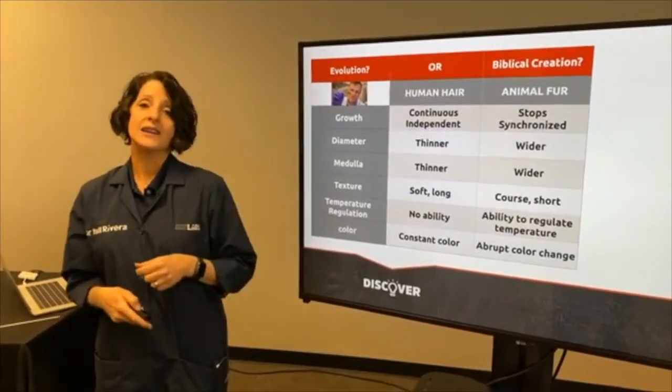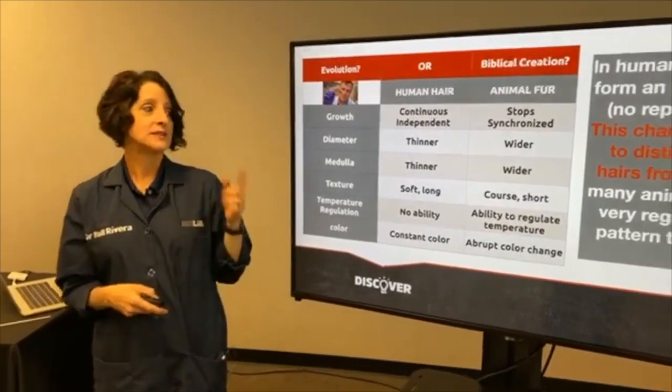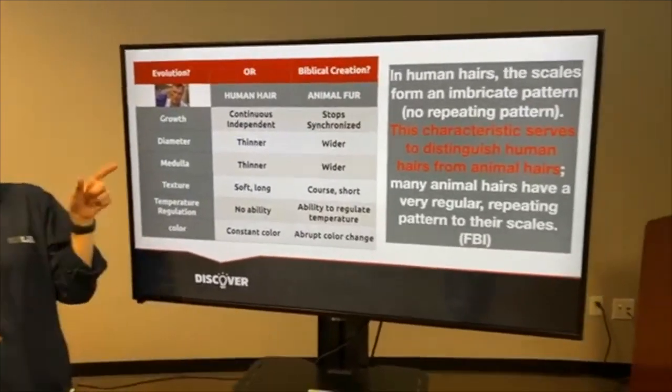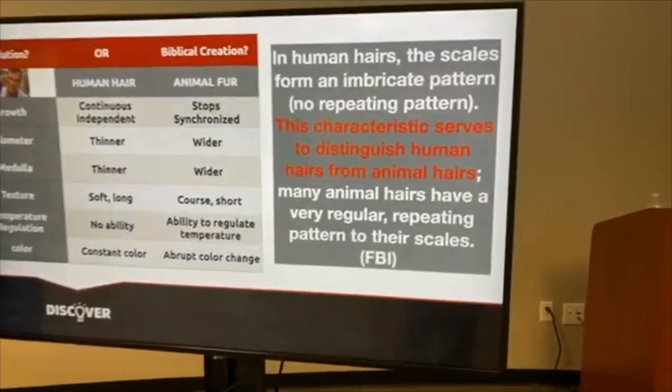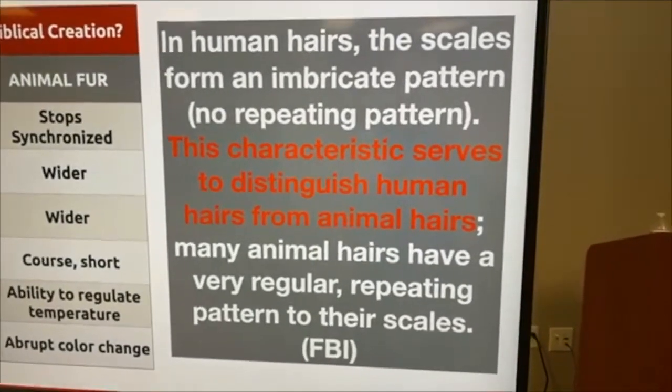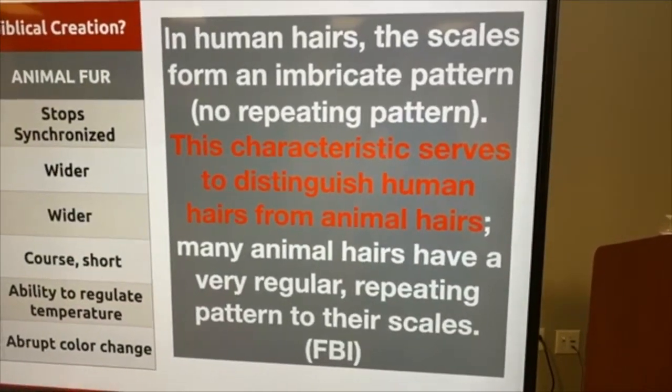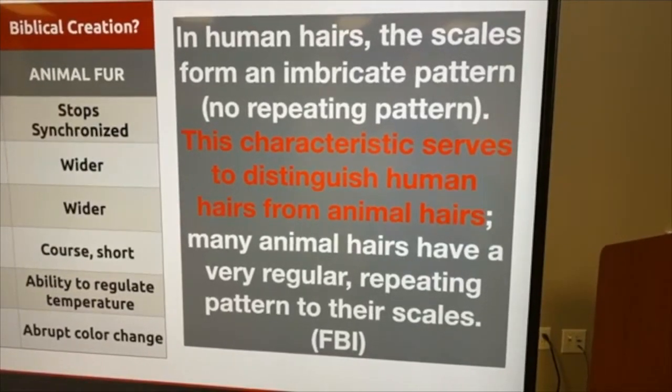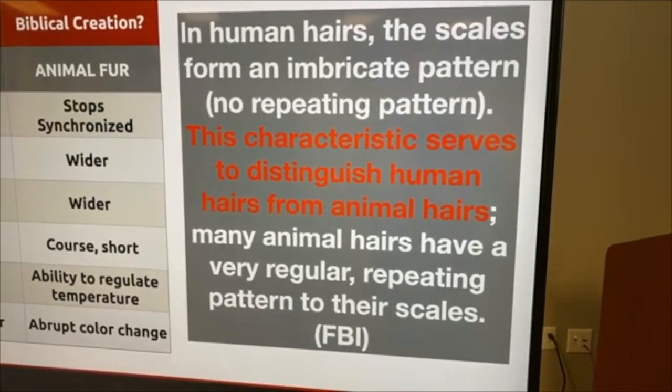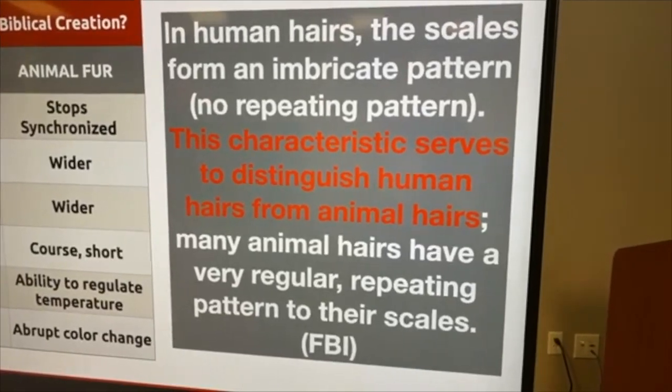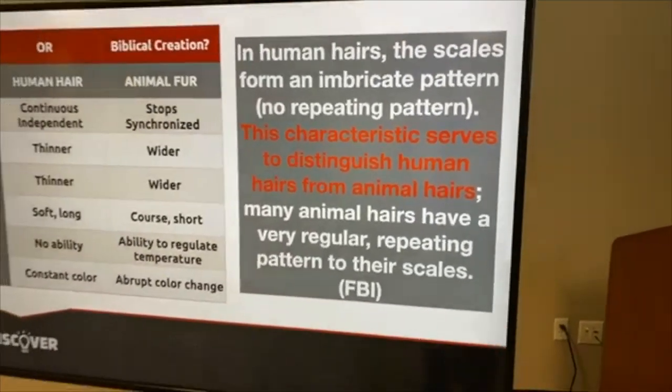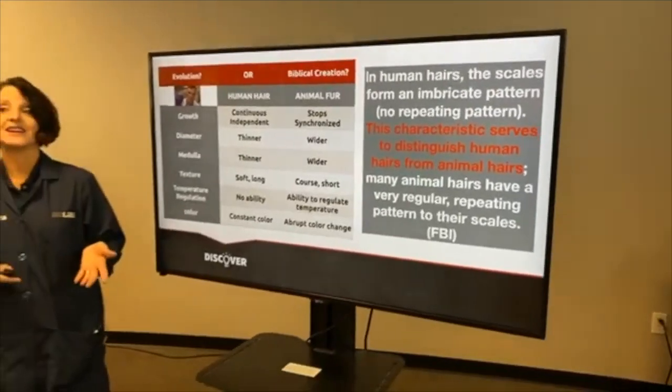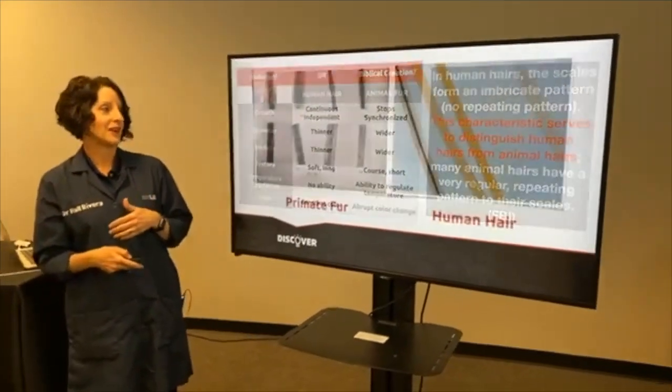Now, the FBI even recognizes that human hair is distinctly different. They say in human hairs, the scales form an imbricate pattern. This characteristic serves to distinguish human hairs from animal hairs. Many animal hairs have a very regular repeating pattern to their scales. So even the FBI on their website had to acknowledge that human hair is distinctly different from animal fur. And that's exactly what we expect to see because we are made in the image of God.